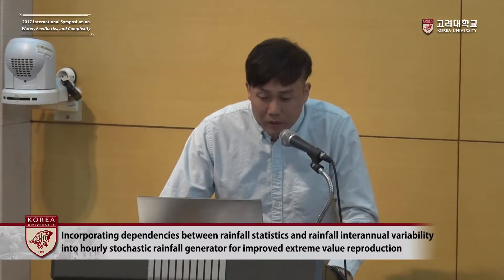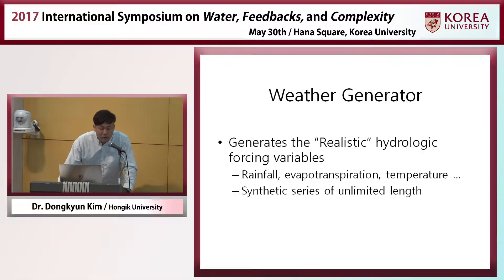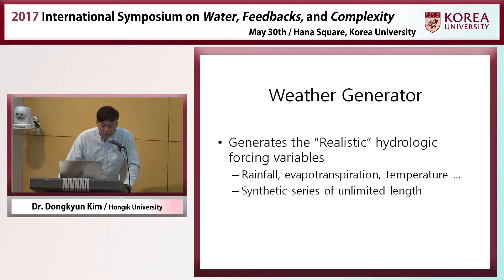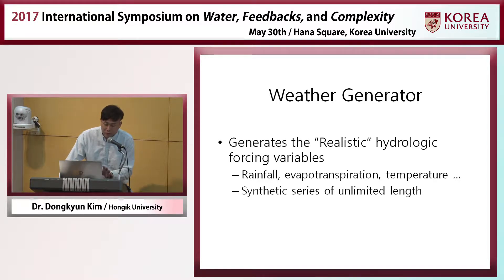What is a weather generator? A weather generator generates realistic hydrologic forcing variables for modeling studies. For example, it can generate rainfall, evapotranspiration, and temperature. It is basically a computer algorithm or program that can synthetically generate a time series or space-time field of these hydrologic forcing variables.